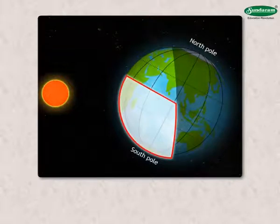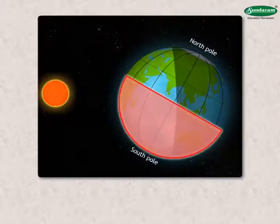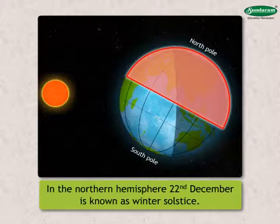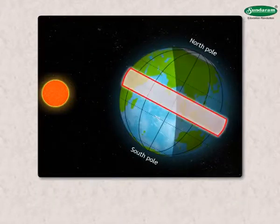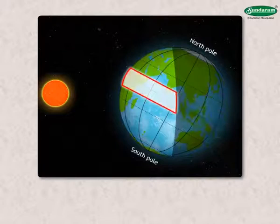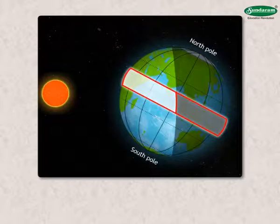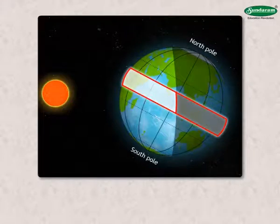Therefore, at this time, days are longer in the southern hemisphere. In the northern hemisphere, 22nd December is known as winter solstice. However, at the equator, the illuminated and dark parts are equal. The equinox and solstice figures show that at the equator, day and night are of equal duration, that is, 12 hours each throughout the year.